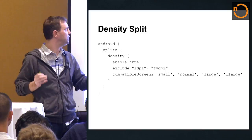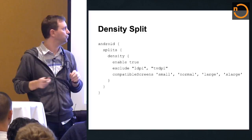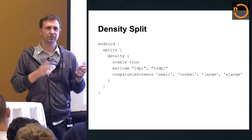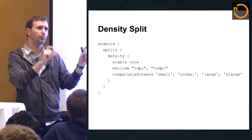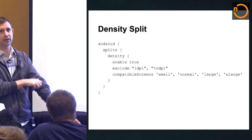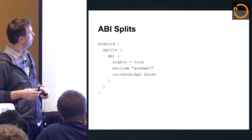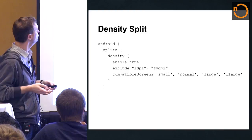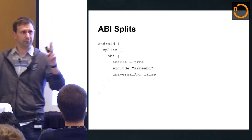For density splits: by default we support every density and will create a split for each. You can start excluding densities, or reset the list and include only what you want. When you split by density you'll want a custom manifest for the compatible-screens item that declares the supported density and screen size. You provide the list of screens you support, and we inject that into your manifest so you don't have to maintain a custom manifest for each split. You can also choose whether to always create a universal APK with all densities. For ABI splits, you can exclude or include ABIs and decide whether you want a fat binary.